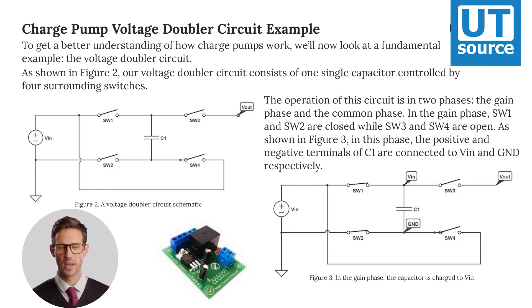As shown in Figure 2, our voltage doubler circuit consists of one single capacitor controlled by four surrounding switches. The operation of this circuit is in two phases, the gain phase and the common phase.